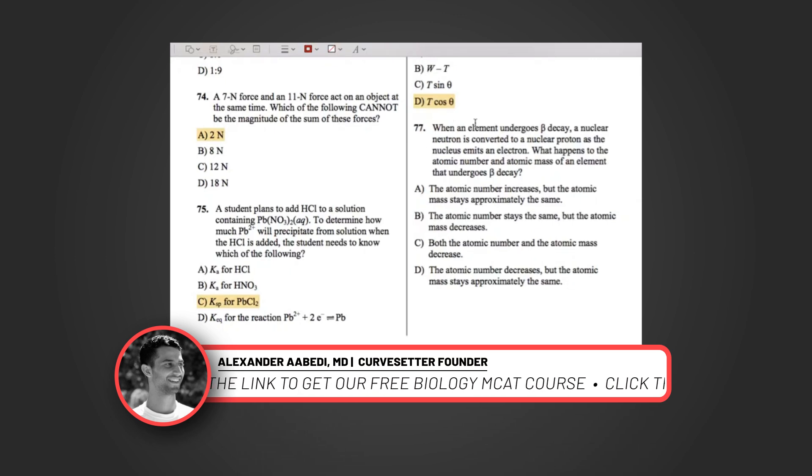But what we do when we convert a neutron to a proton is that we're increasing the atomic number. The atomic number is defined by the number of protons we have in a specific atom. So we would be increasing the atomic number due to that conversion to a proton, but we wouldn't really be changing the mass. So let's look for that answer choice. A says the atomic number increases, but the atomic mass stays approximately the same. So that's the answer we're looking for.